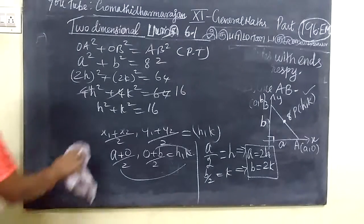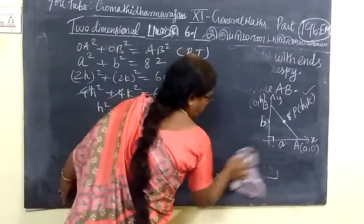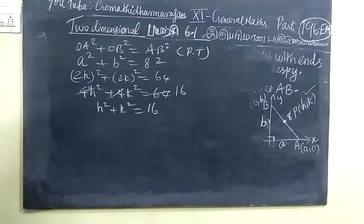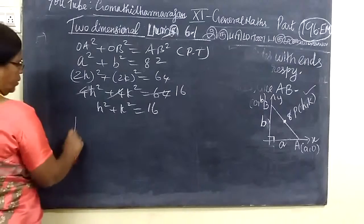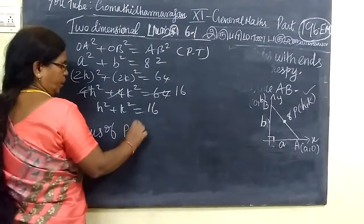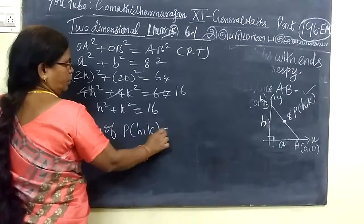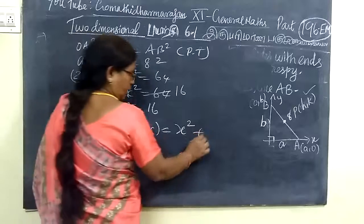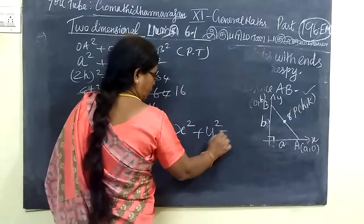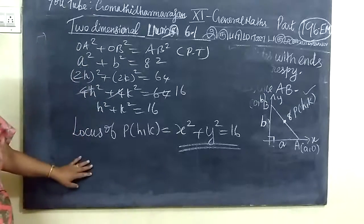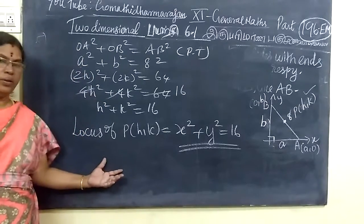This is the locus. The locus of the midpoint. You are writing in terms of x and y. So the locus of P(x, k) is x square plus k square equals 16. That's your answer to the question.